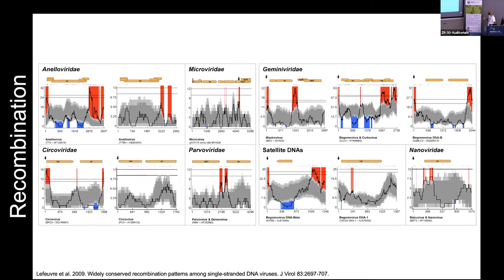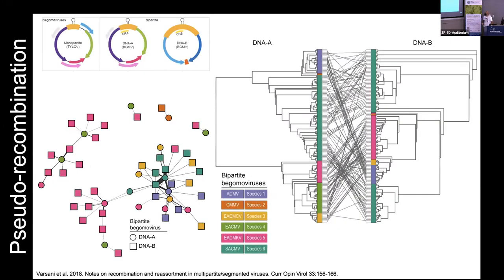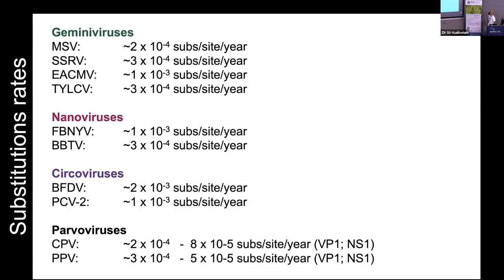Even in segmented or multipartite viruses, if you take the cognate molecules and draw phylogenies, they're not congruent. That means there is modularity in these bipartite viruses. The way I like the concept of modularity — it's almost like trading. You're going to a new host and you need an extra protein or extra accessory item, so you can trade and pick and choose. This becomes a very important concept in the evolution of some of these viruses.